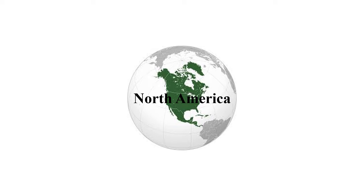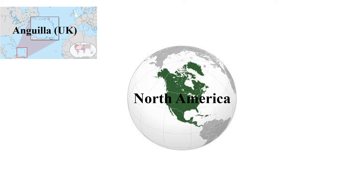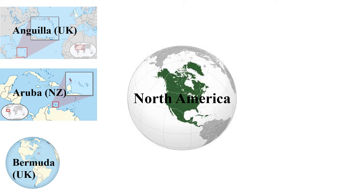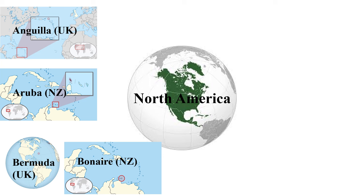In North America, there are a number of dependent territories with no permanent rivers. Anguilla is an overseas territory of the United Kingdom with no permanent rivers. Aruba is an overseas dependent territory of the Kingdom of the Netherlands in North America with no permanent rivers. Bermuda is an overseas territory of the United Kingdom in North America with no permanent rivers. Bonaire is another dependent territory which is part of the Kingdom of the Netherlands and has no permanent rivers.